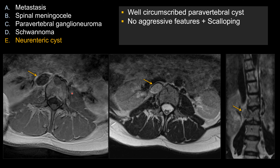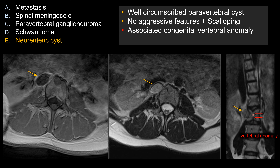This speaks to the slow-growing, non-aggressive feature of neuroenteric cysts. But probably the most important clue here is that there's an adjacent vertebral body anomaly. You can see this vertical midline cleft gives you this butterfly vertebra. So with a combination of a benign-appearing cystic lesion with adjacent vertebral body anomaly, this is a classic feature for neuroenteric cysts.